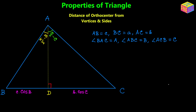Let's look at the side BD. BD equals c·cos(B) — that's the projection of side AB onto BC. Similarly, DC equals b·cos(C), which is the projection of AC onto BC. So the construction of the first altitude is complete.